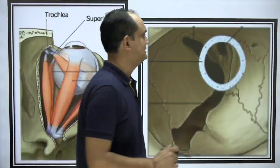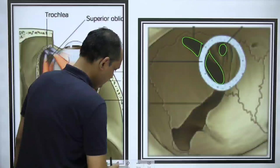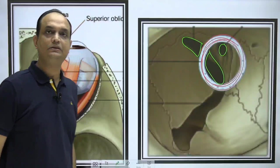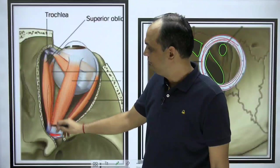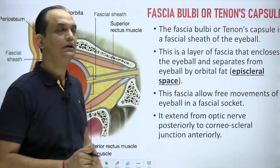The ring of Zinn is the point of origin of all four rectus muscles. In this diagram, you can see the optic canal and the central part of the superior orbital fissure, with the lateral part of the superior orbital fissure. In between, there is a ring which is a modification of the periosteum known as the ring of Zinn, giving origin to all four rectus muscles of the eyeball.